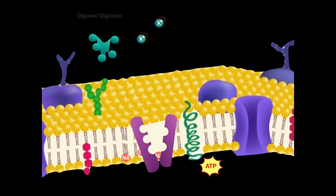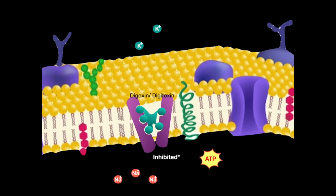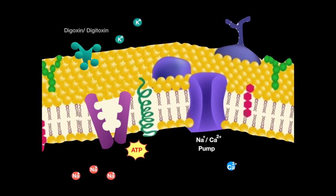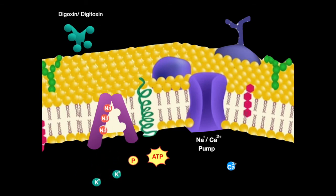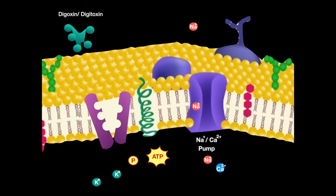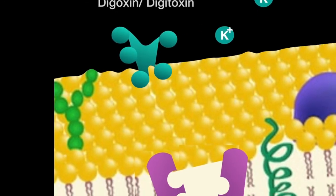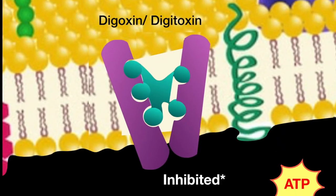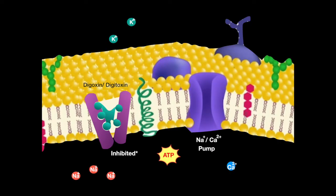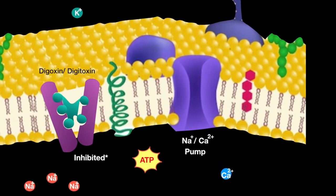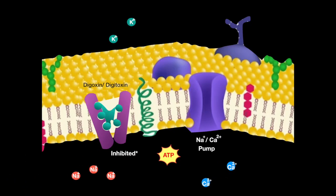The way it works is by directly inhibiting the sodium-potassium pump. A different pump, the sodium-calcium pump, works in an antiport mechanism, pumping calcium out of the cell by allowing sodium to flow into the cell. But since the sodium-potassium ATPase is inhibited, digoxin and digitoxin indirectly inhibit the sodium-calcium pump, thereby increasing calcium concentrations inside the cell, which causes the heart to contract stronger.